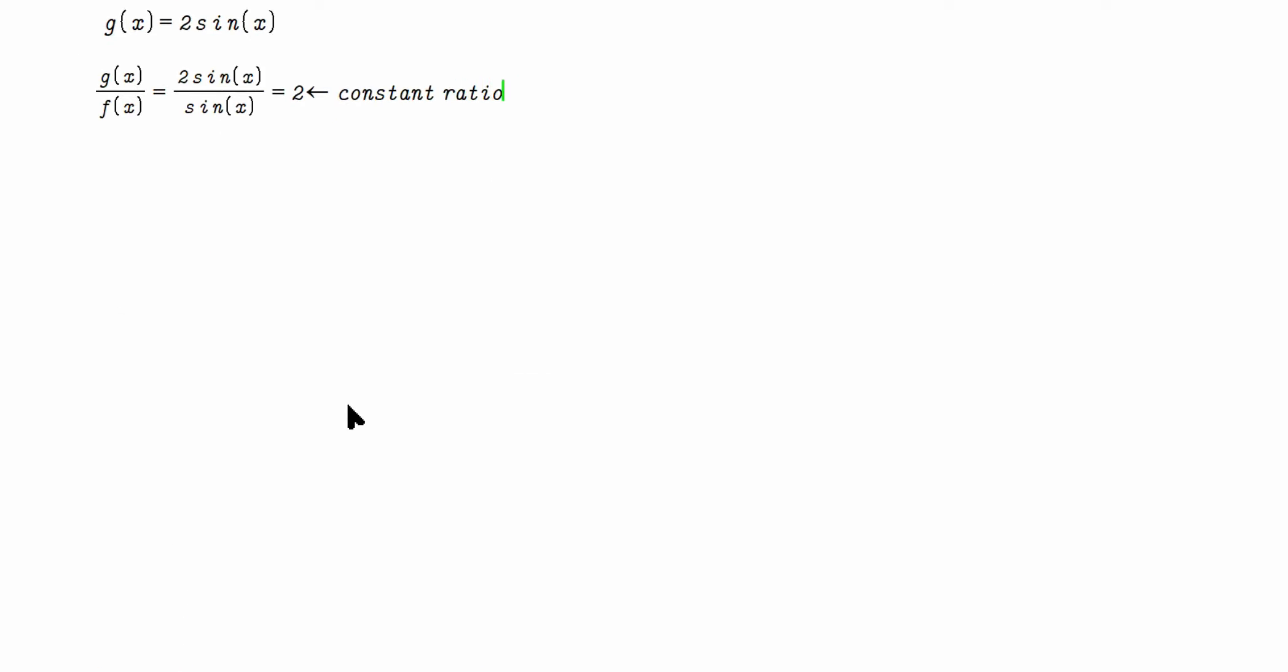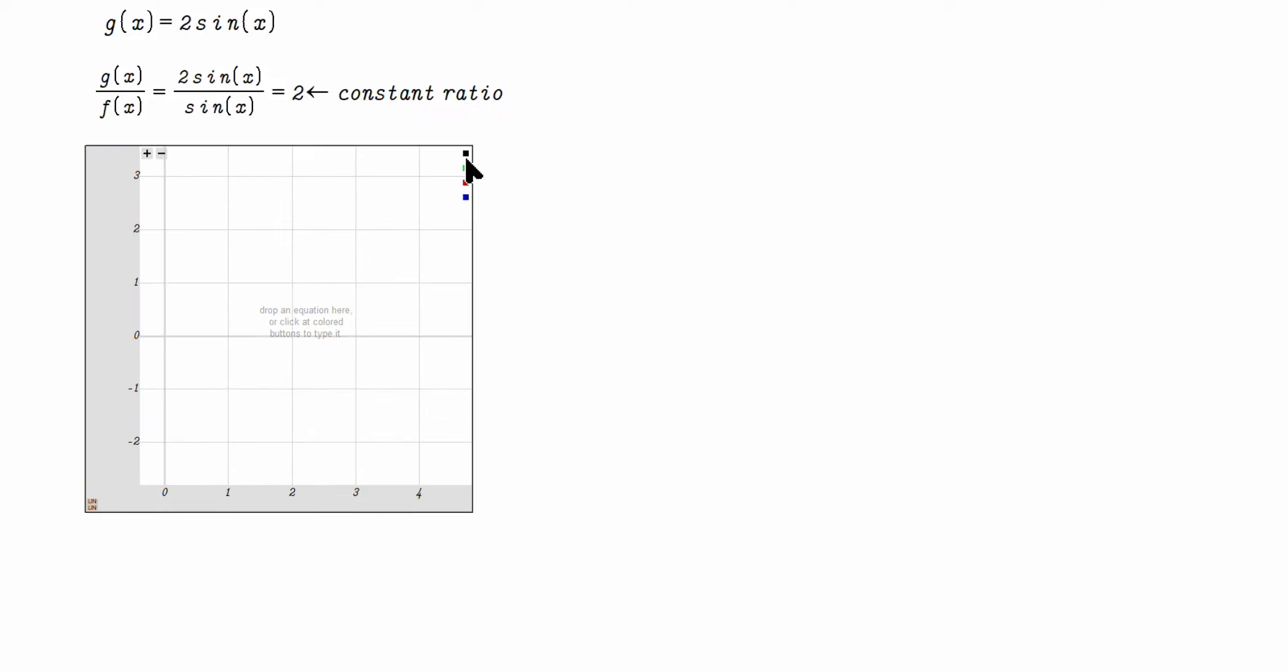Look at the difference in the graphs that emerge during this process. 2 sine x over sine x this way. Look, it's a constant ratio. Input 2 sine x, that's the green curve. Input sine x, that's the red curve. When you divide one by the other, you always get this constant ratio. This is 2 sine x over sine x always equal to 2.